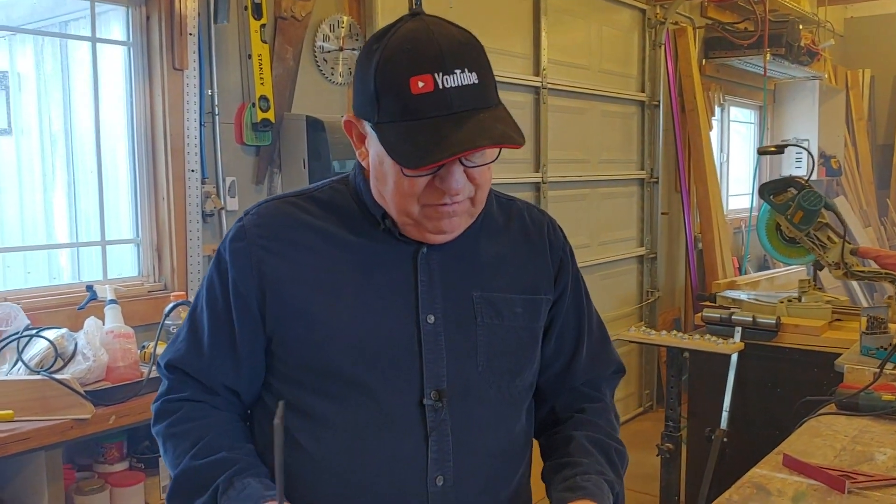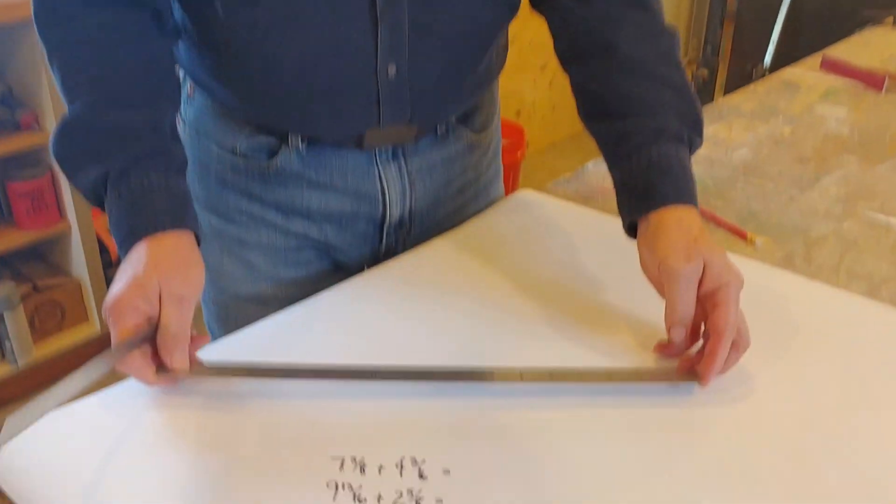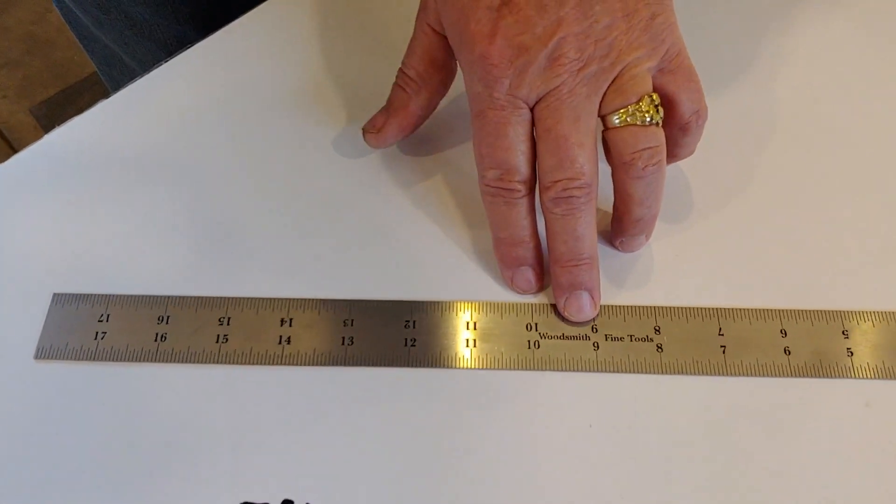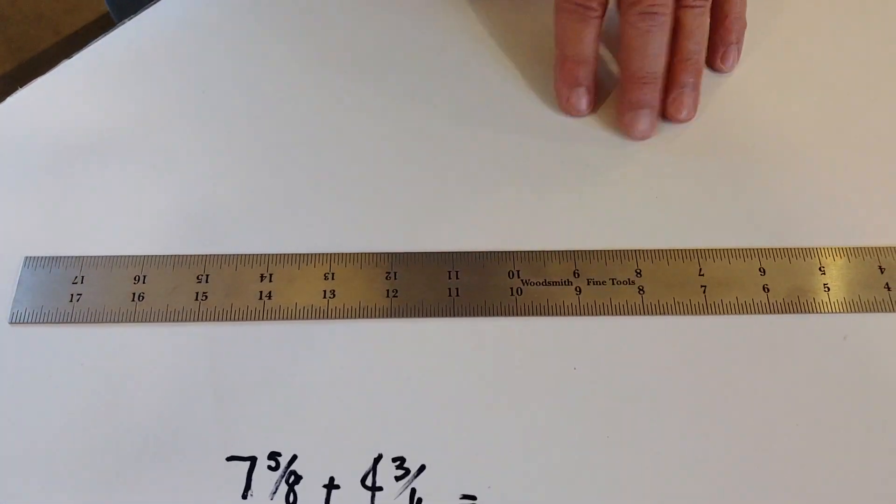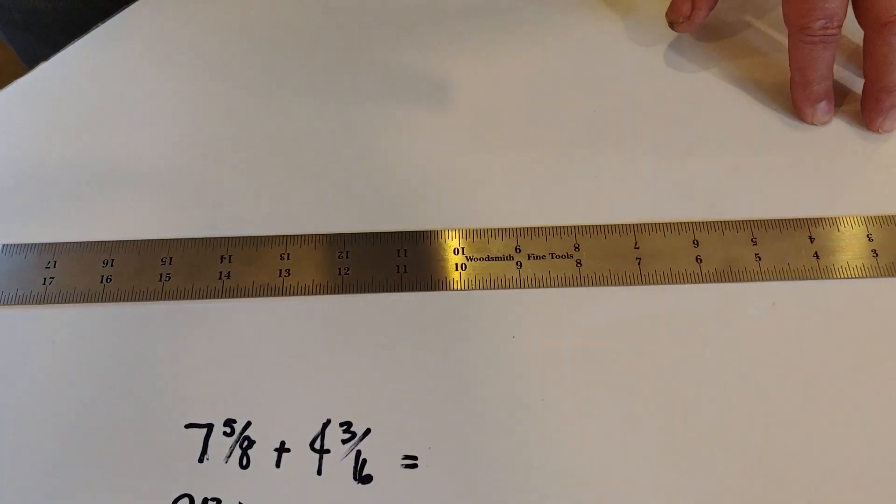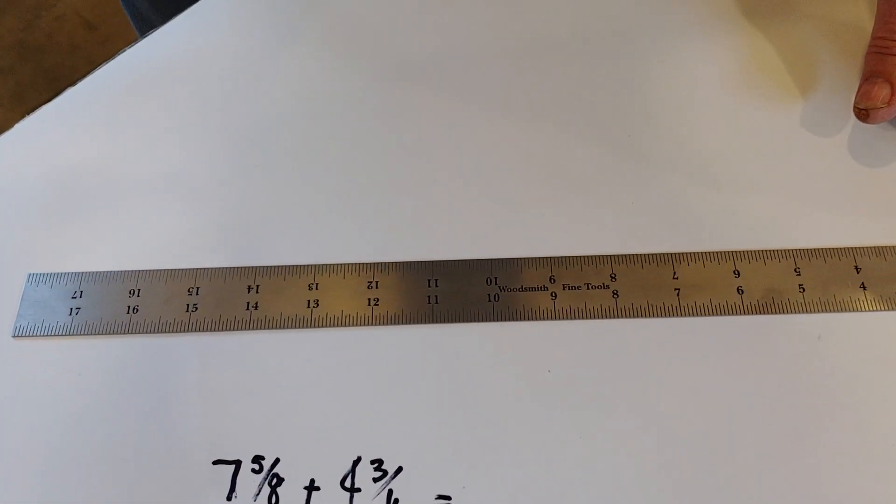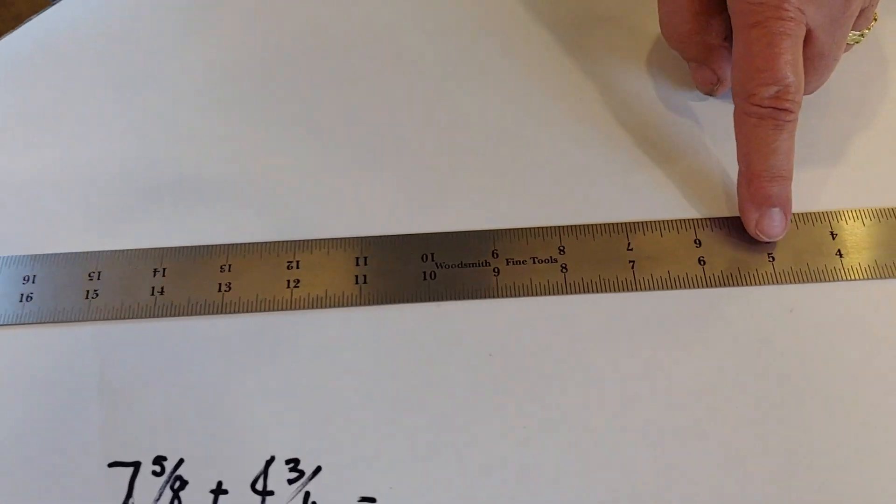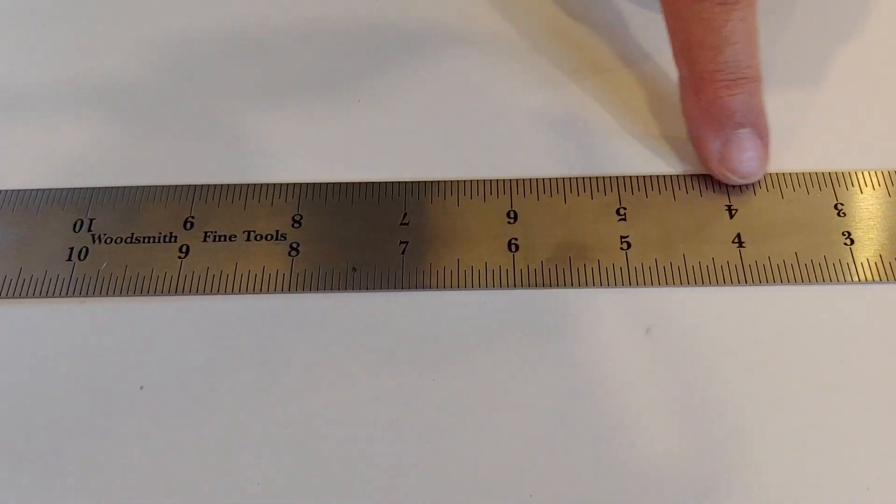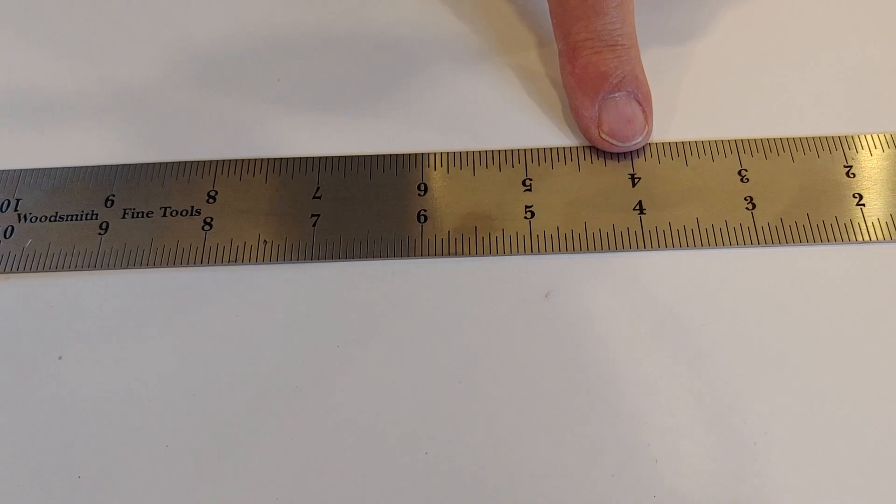So what I'm going to do is I'm going to first lay down one ruler and I'm using these Woodsmith Fine Tools. I love these rulers, by the way, and I'll give you a link below where you can get them. But as you can see from your vantage point, you can see the same numbers that I do. So you're seeing a 4 and I'm seeing a 4 on this side.